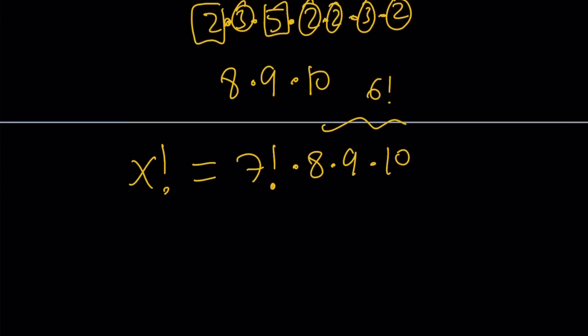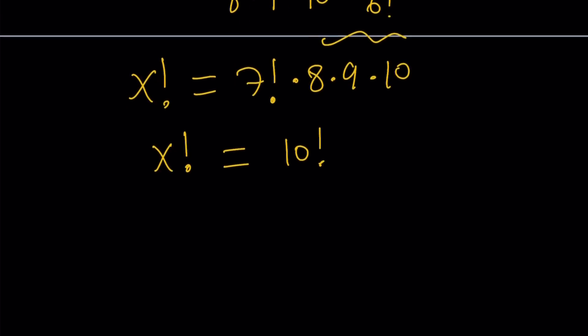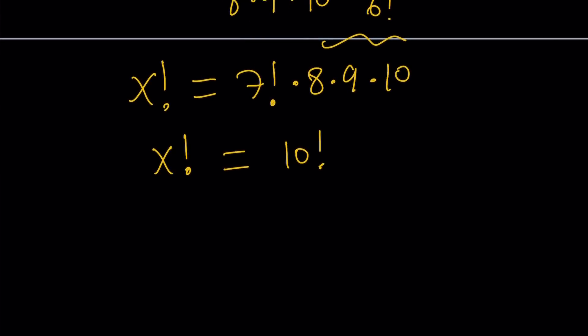And now, this looks like what? 10 factorial, doesn't it? So x factorial equals 10 factorial gives you what? Come on, it's not a million dollar question, it's actually a one cent question, but it's still important. X equals 10. So something to think about: is there a single solution to this? If x is an integer, a non-negative integer, yes. But if x is a real number, let's kind of see what happens.